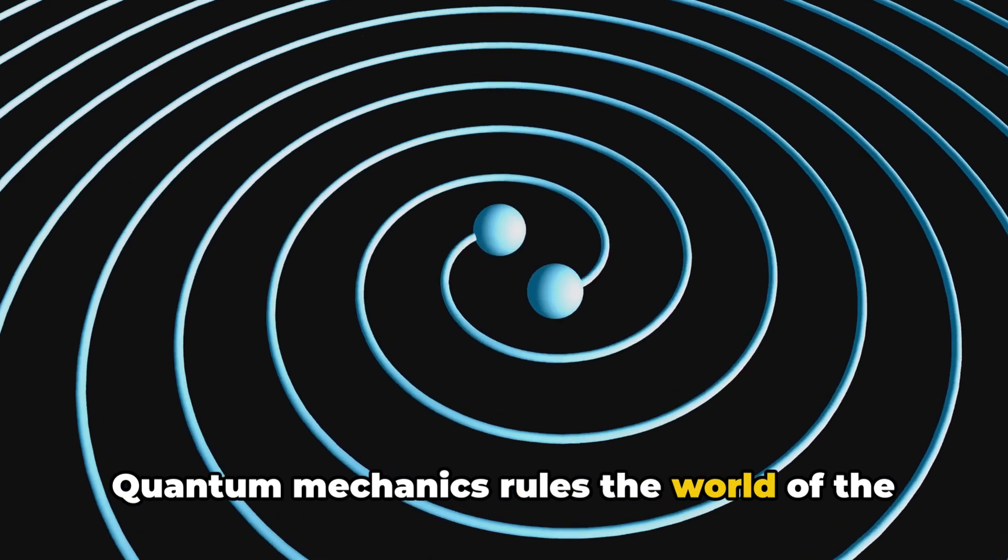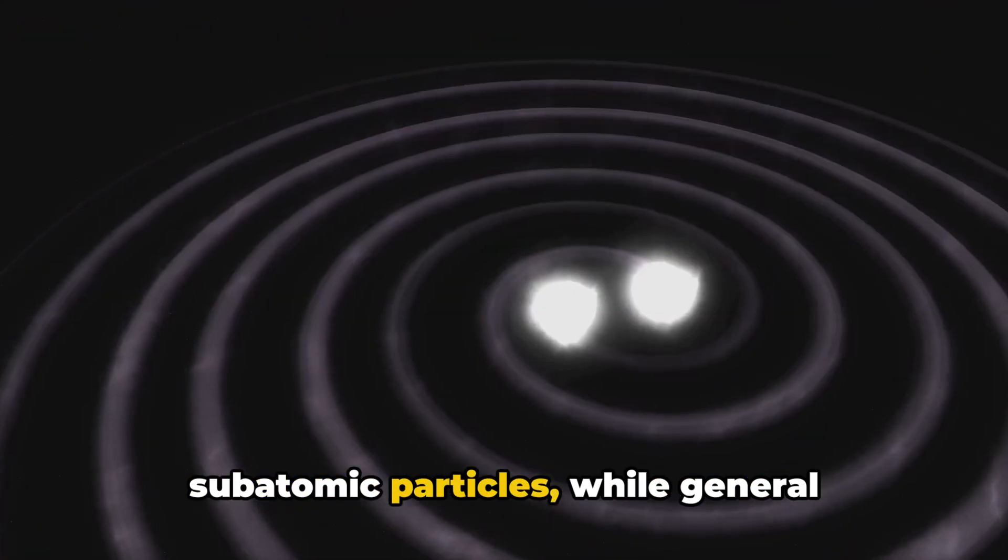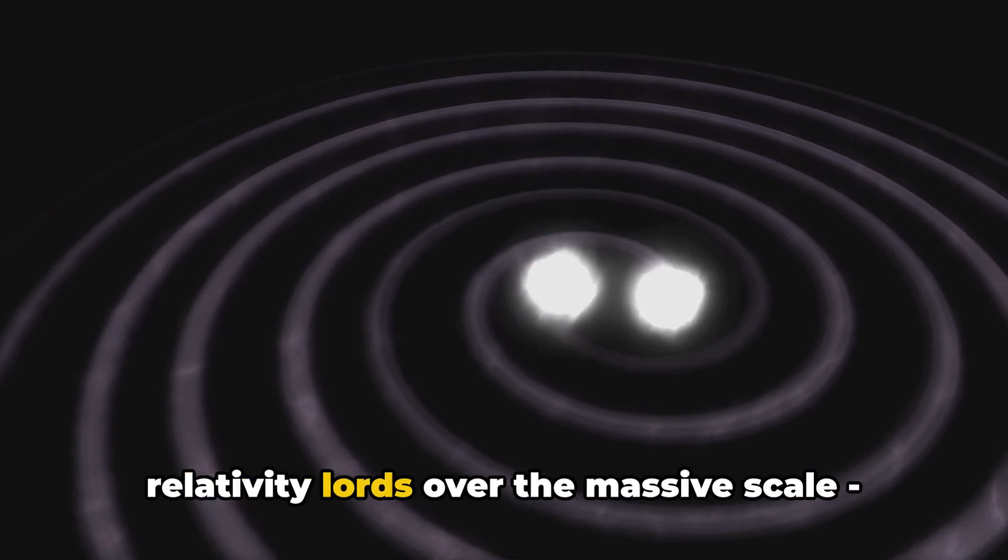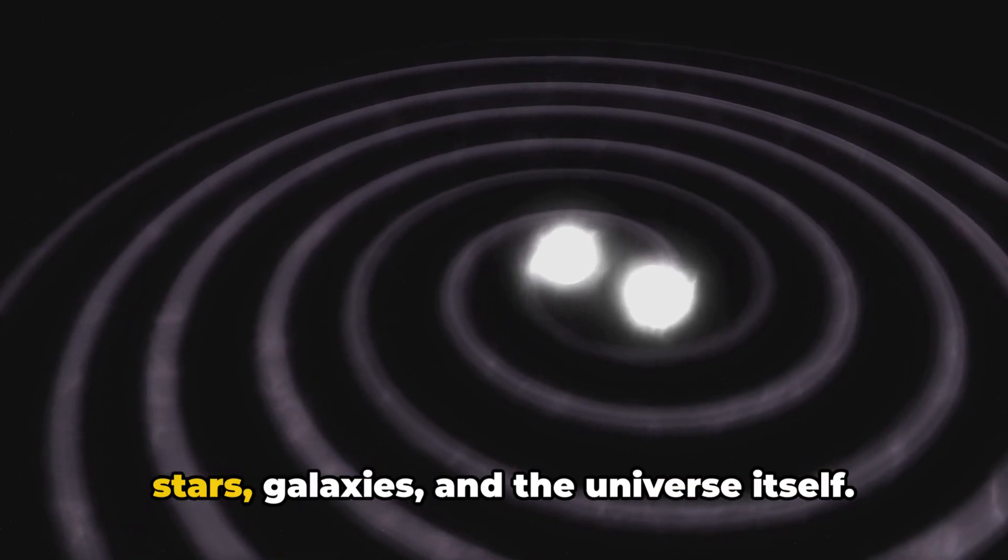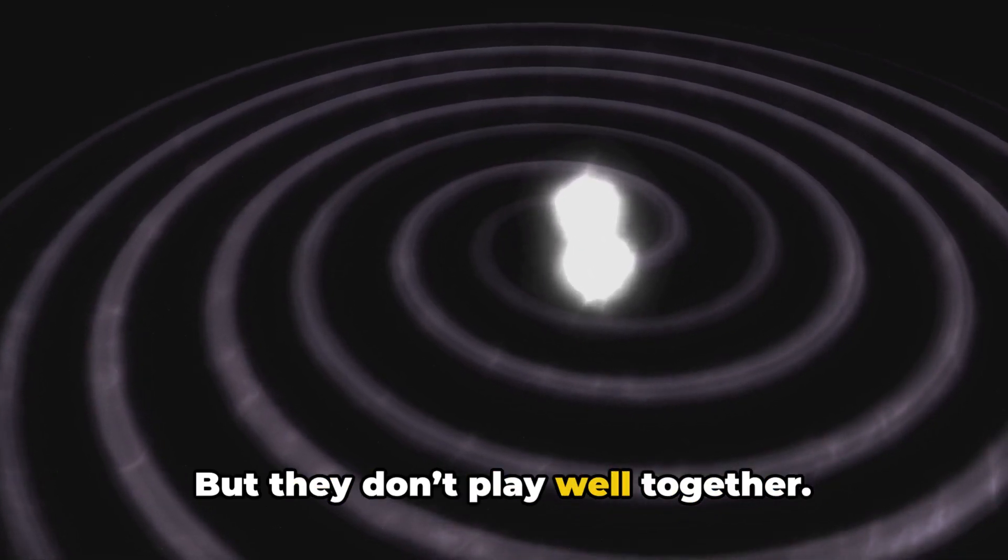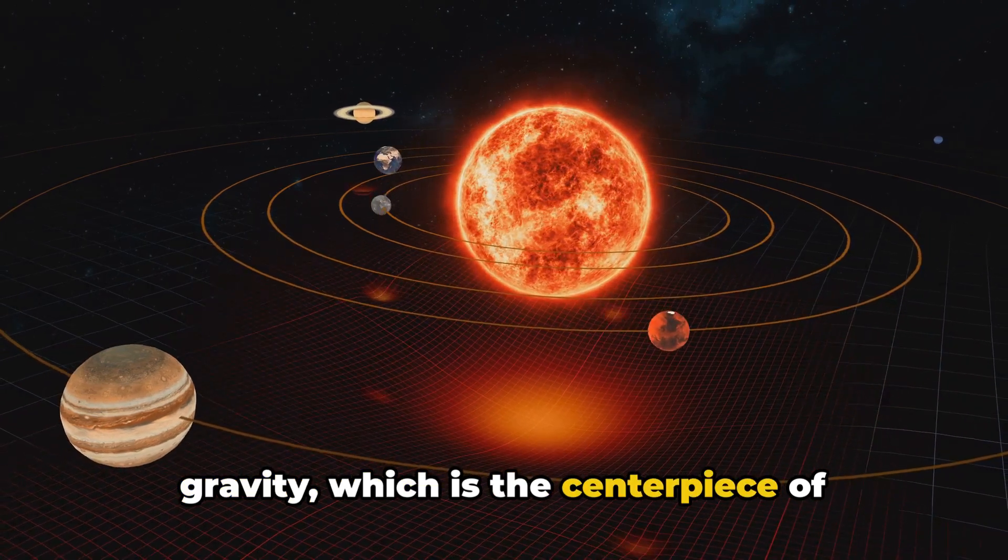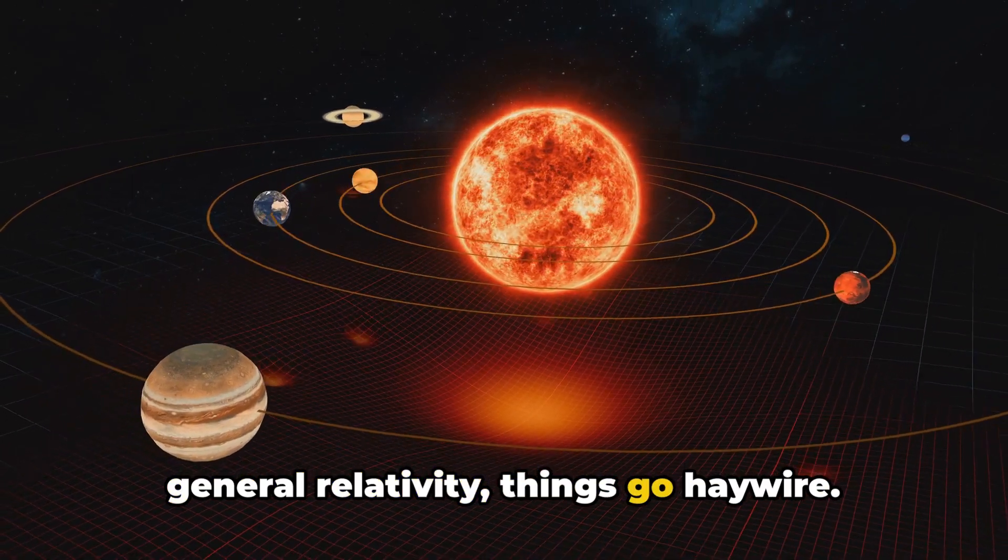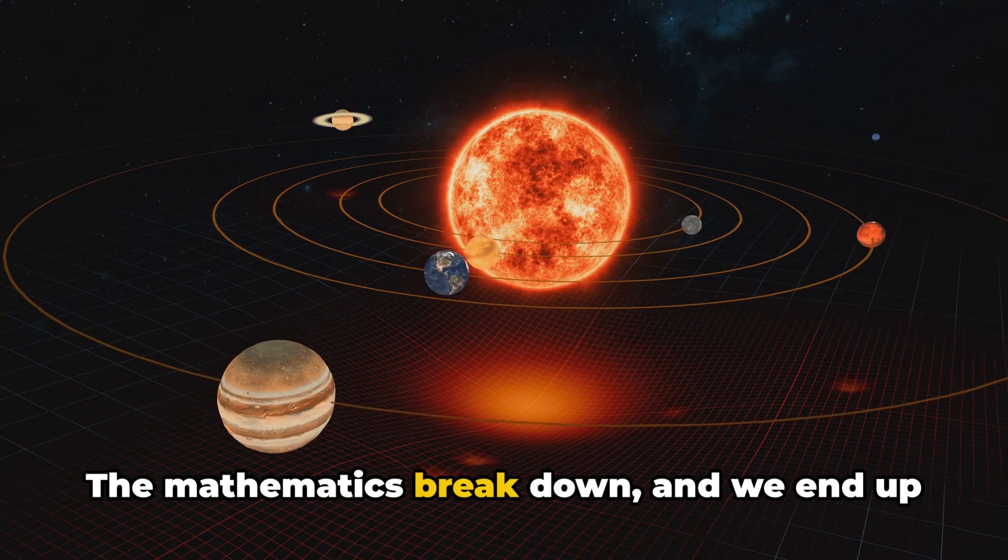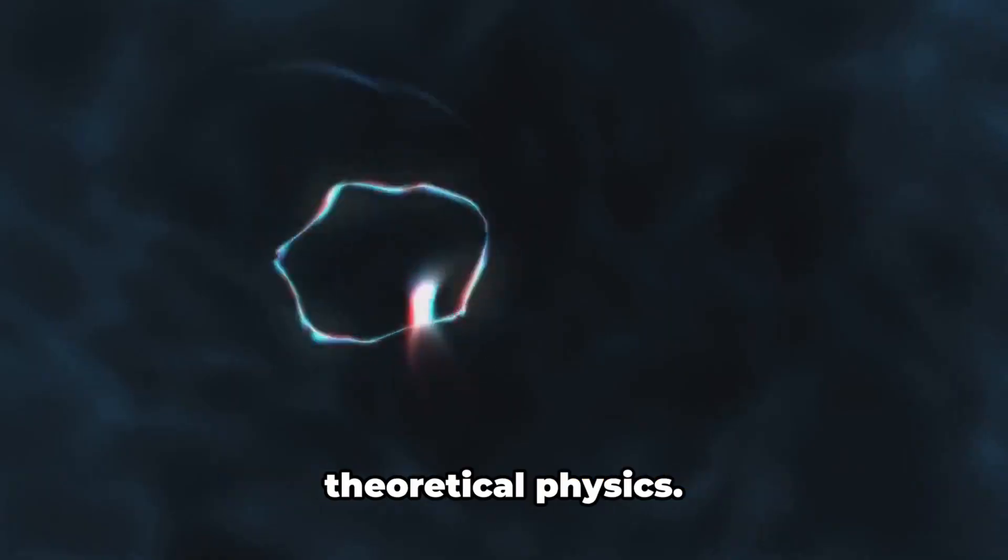Quantum mechanics rules the world of the incredibly small, the atomic and subatomic particles, while general relativity lords over the massive scale: stars, galaxies, and the universe itself. But they don't play well together. When we try to apply quantum mechanics to gravity, which is the centerpiece of general relativity, things go haywire. The mathematics break down and we end up with nonsensical answers. This is the great conundrum of theoretical physics.